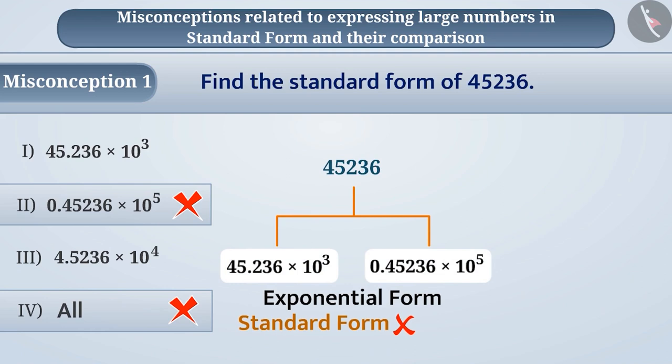It is because the standard form of a number is written in the form m × 10^p where the value of m can be equal to or more than 1.0 but less than 10.0, and p is an integer.